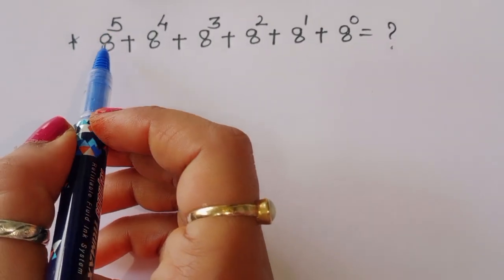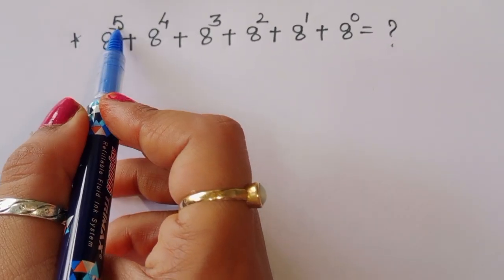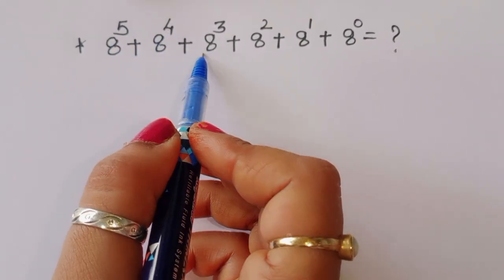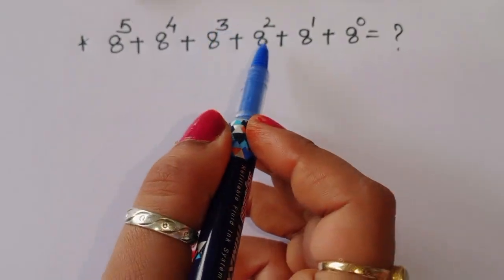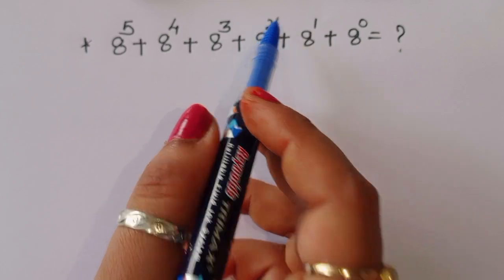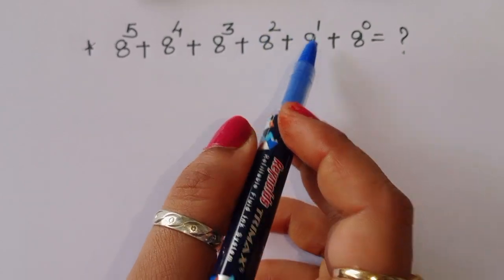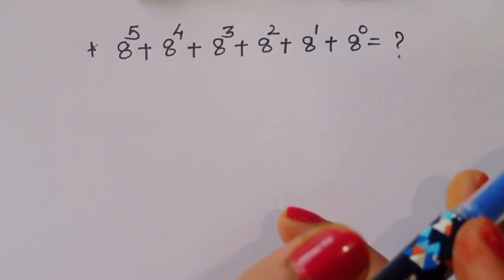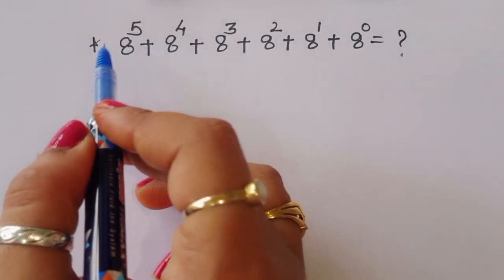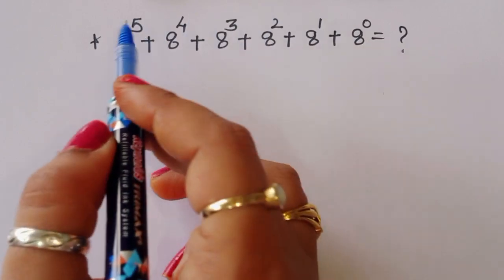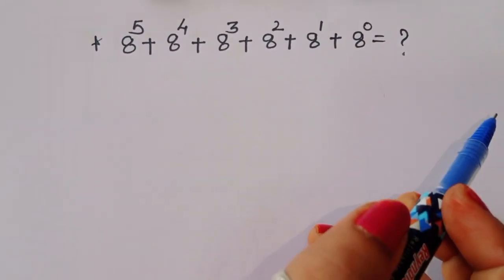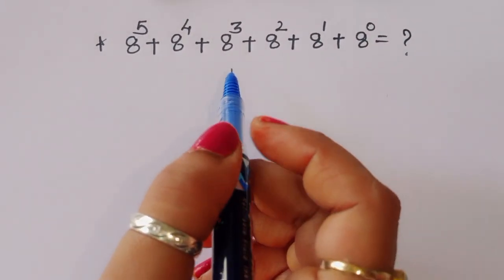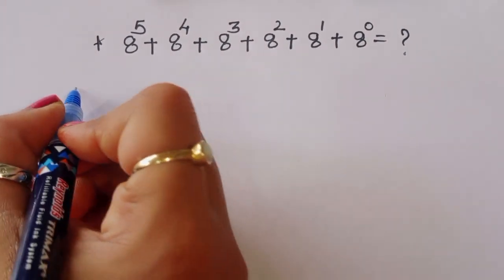The question is: 8 power 5 plus 8 power 4 plus 8 power 3 plus 8 power 2 plus 8 power 1 plus 8 power 0 is equal to what? We have to find out the value of this term. Let's see the solution.